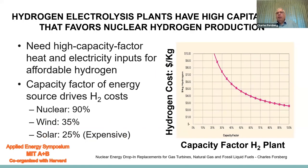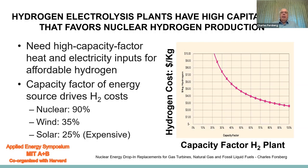Hydrogen electrolysis plants have high capital costs that favor nuclear hydrogen production. The figure shows the cost of hydrogen versus the capacity of the hydrogen plant — you need high capacity factors for low-cost hydrogen. That makes the capacity factor of the heat and electricity source the driving factor in hydrogen costs. Nuclear has 90% capacity factors versus solar at about 25%, and that difference implies nuclear can provide cheaper hydrogen than solar.